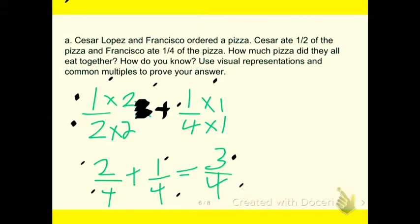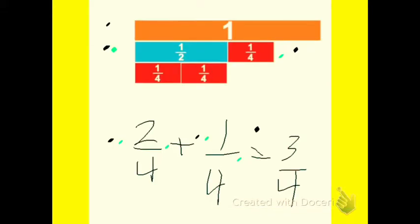Here we made a model to show you. So we have one whole and one half and one fourth. So two fourths fit under one half, plus one fourth, which our answer equals three fourths.